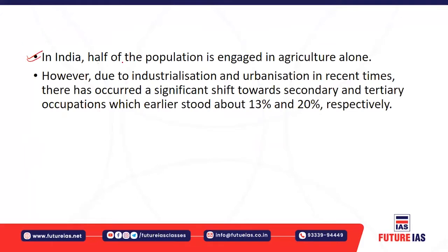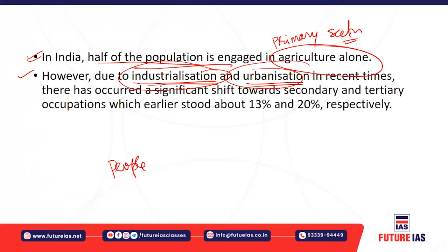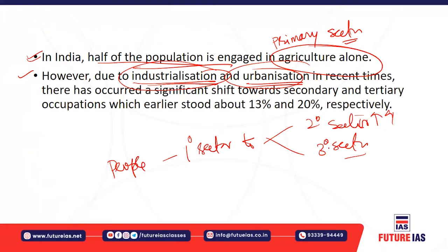In India, half of the population is still engaged in agriculture, meaning half is dependent on the primary and allied sector. However, due to industrialization and urbanization happening in India, there are significant changes in the occupational structure — people are moving from the primary sector to secondary and tertiary sectors, and the share of the primary sector is decreasing.